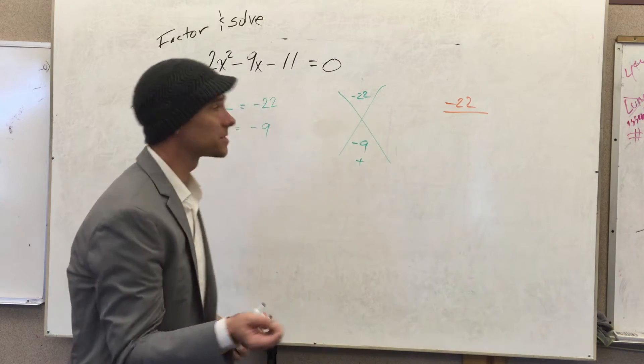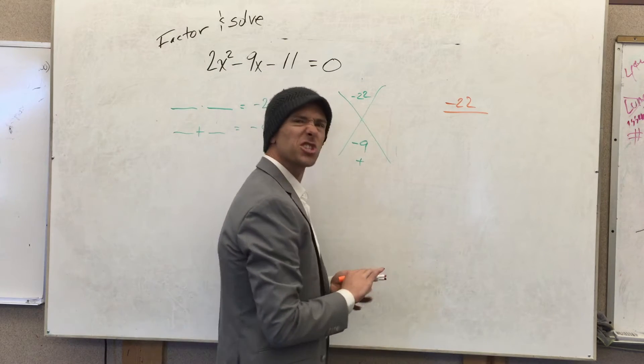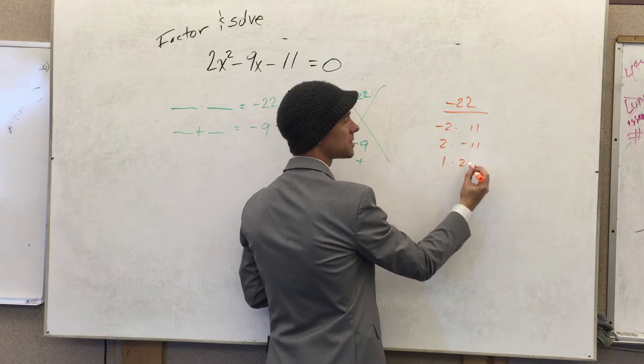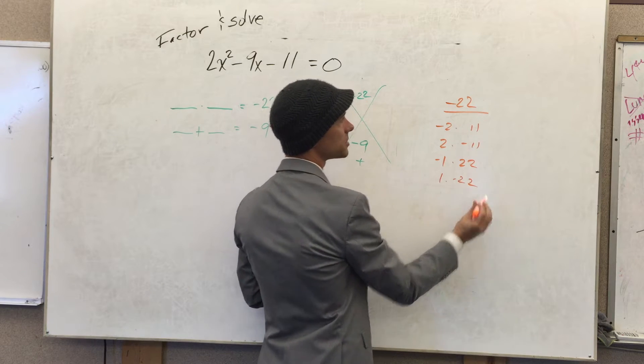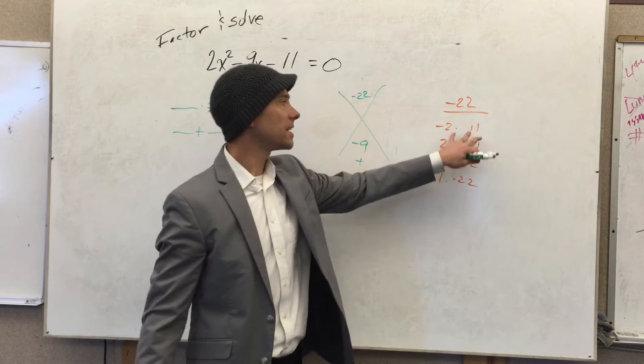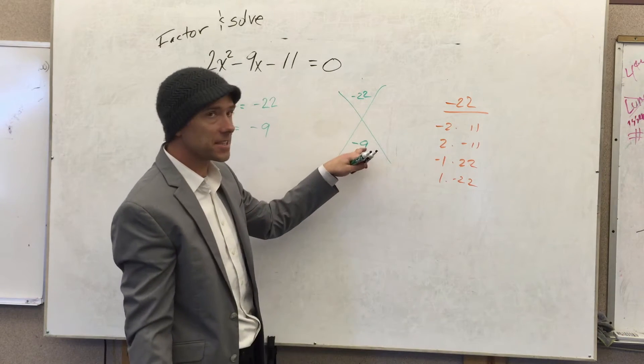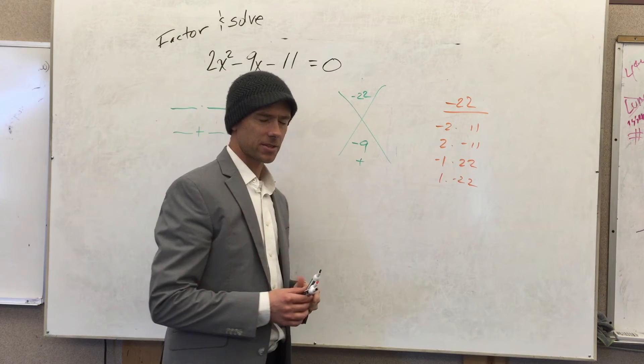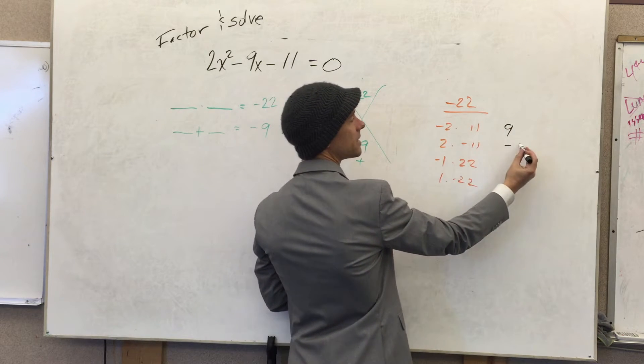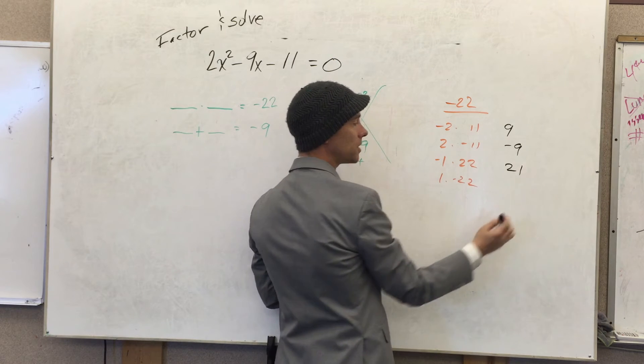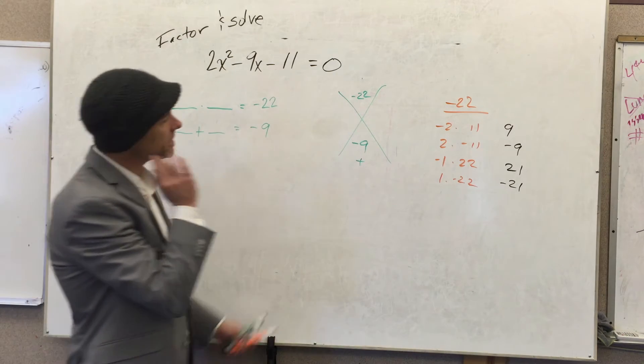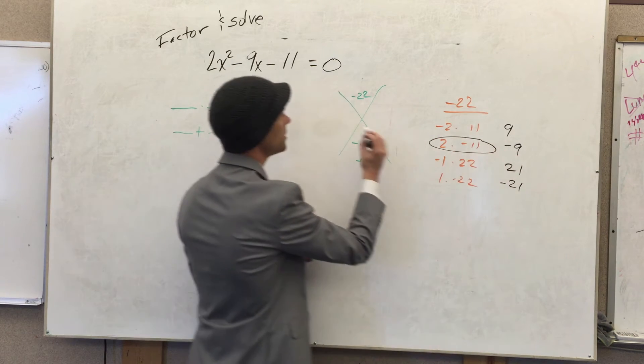Let's just start listing them: negative 2 times 11, 2 times negative 11, 1 times 22, negative 1 times negative 22. I think that's all of them. What I like to do is make another column where I add the two numbers, really looking for the ones that add to this term right here. Negative 2 plus 11 gives positive 9. If I have 2 and negative 11, I get negative 9. So we have our winner: 2 and negative 11.